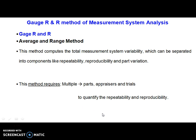Today we are discussing the average and range method, which computes total measurement system variability. This can be separated into three basic components: the first is the repeatability component, the second is the reproducibility component, and the third is the total part variation component.